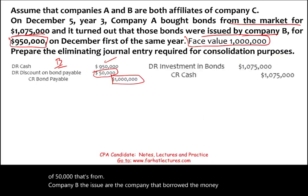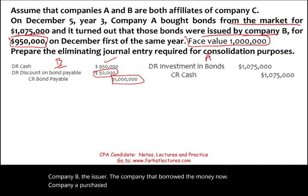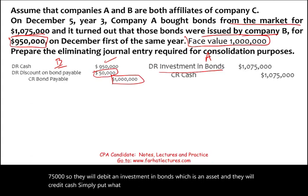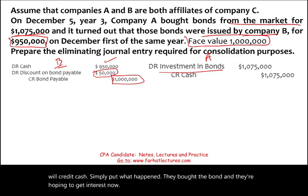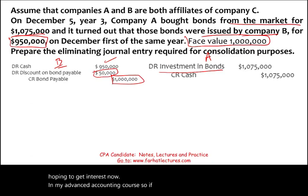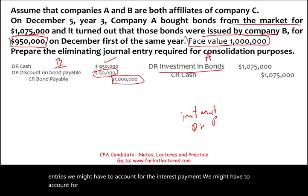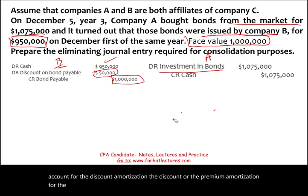Company A purchased the bond for $1,075,000. They debit investment in bonds, which is an asset, and credit cash. Simply put, they bought the bond hoping to earn interest. In the advanced accounting course, we account for interest payments and discount or premium amortization. For the CPA exam, you just need the basic journal entries, but for more detail please visit farhatlectures.com.